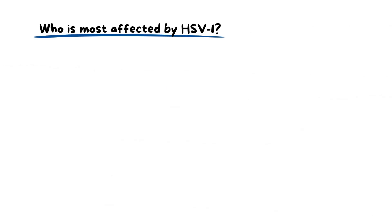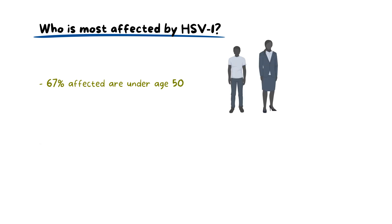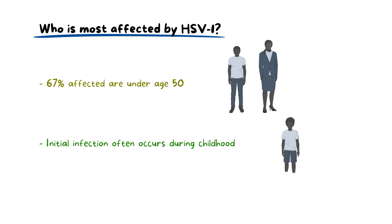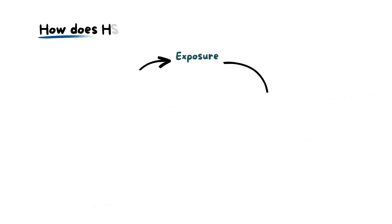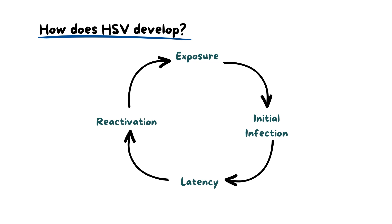According to the World Health Organization in 2021, it is estimated that around 67% of people under the age of 50 are infected with HSV-1. The initial infection often occurs during childhood, when children come into contact with infected individuals, often through casual interactions like sharing food or toys.